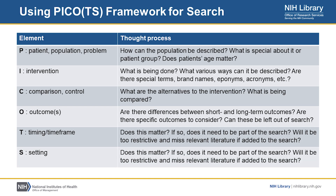You can use the PICO framework elements to think about what your research question is and some of the things you need to consider as part of your search. For example, with P — patient population or problem — you may want to think about how that population is described, what's special about that population or patient group, and whether the patients' age matters. For interventions, you can think about what is being done and how it can be described. Are there different ways to think about it? Are there special terms, brand names, eponyms, or acronyms you may need to consider? There could be multiple ways of describing them, and you may need to put that as part of your search in order to be the most comprehensive search possible.